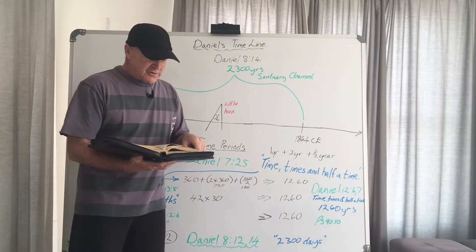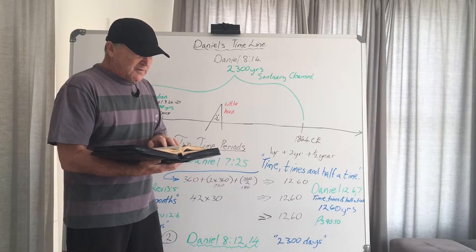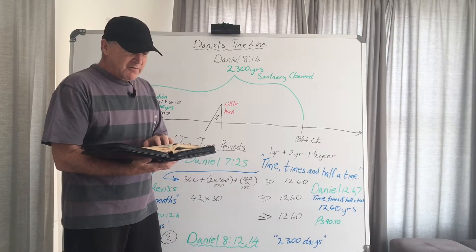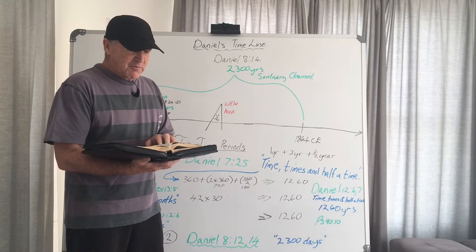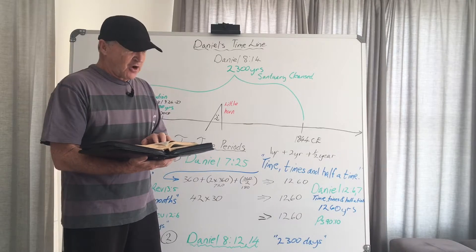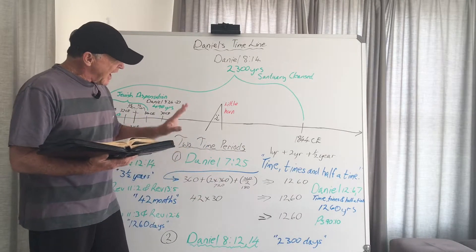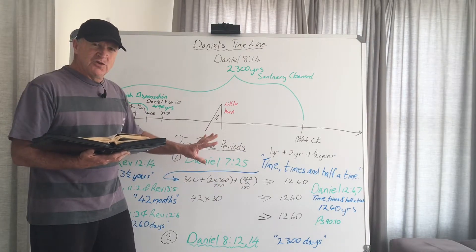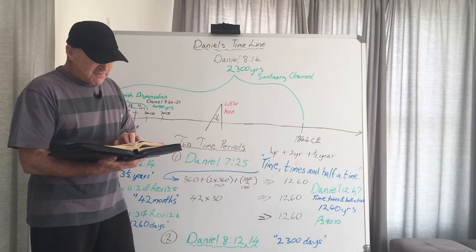In Daniel chapter 12 verse 6, one of them said to the man clothed in linen, who was above the waters of the river, how long will it be before these astonishing things are fulfilled? So we find again the question is asked, how long when these astonishing things that this little horn is going to do is going to be fulfilled? How long? And then in verse 7,